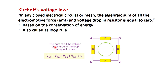Now, Kirchhoff's voltage law states that in any closed electrical circuit or mesh, the algebraic sum of all the electromotive force (EMF) and voltage drops in resistors is equal to zero. KVL is based on the conservation of energy and is also called the loop rule.